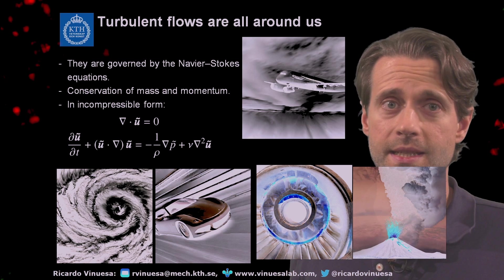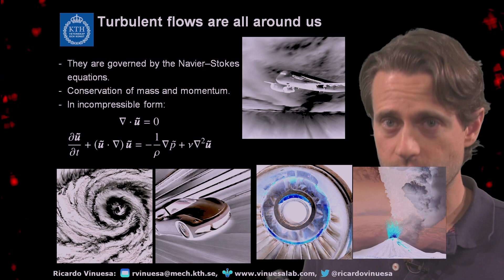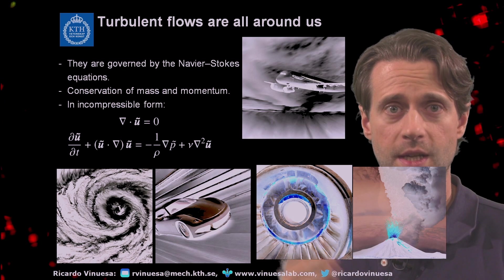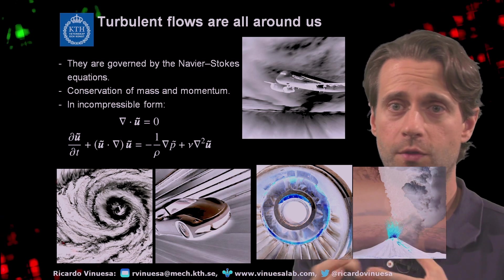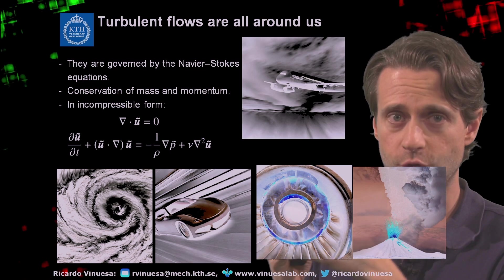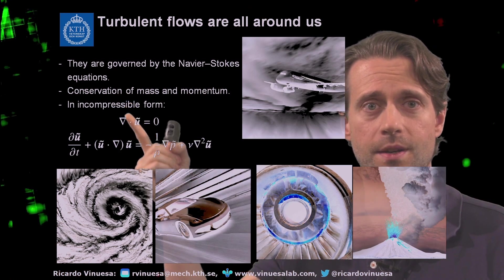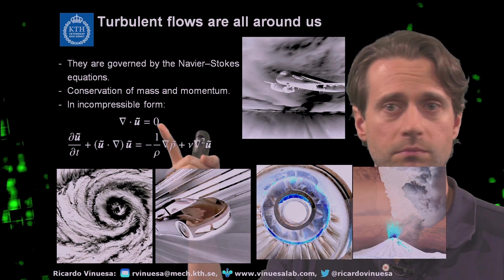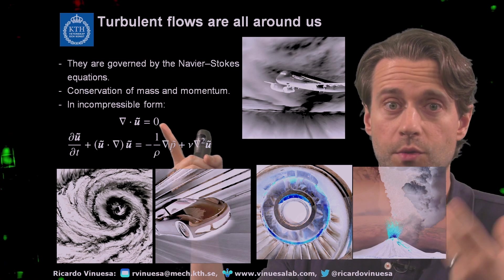Turbulence is basically governed by the Navier-Stokes equations, and these are the equations governing fluid flows. The Navier-Stokes equations are a manifestation of conservation of mass and also conservation of momentum. In incompressible form, the first equation is basically the divergence of the velocity field equal to zero — this is the continuity equation for incompressible flow.